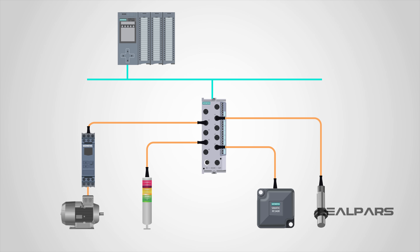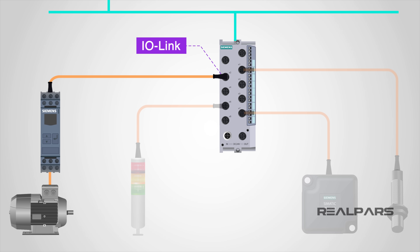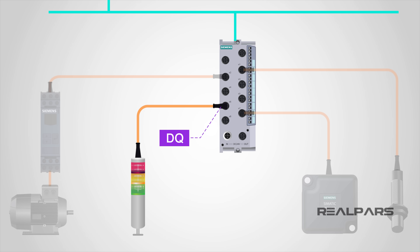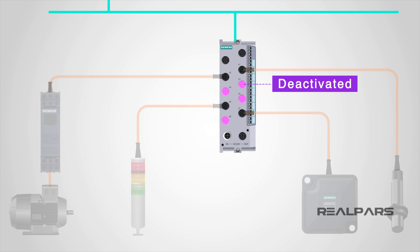The IO-Link protocol allows an IO-Link port to be operated in one of four different operating modes. The first mode is the IO-Link mode, meaning the port is used for IO-Link communication. The second mode is the DI mode, meaning the port acts in the same way as a digital input device. The third mode is the DQ mode, meaning the port acts in the same way as a digital output device. The fourth mode is deactivated, meaning the port is not assigned to any other modes and is reserved for when the port is unused.